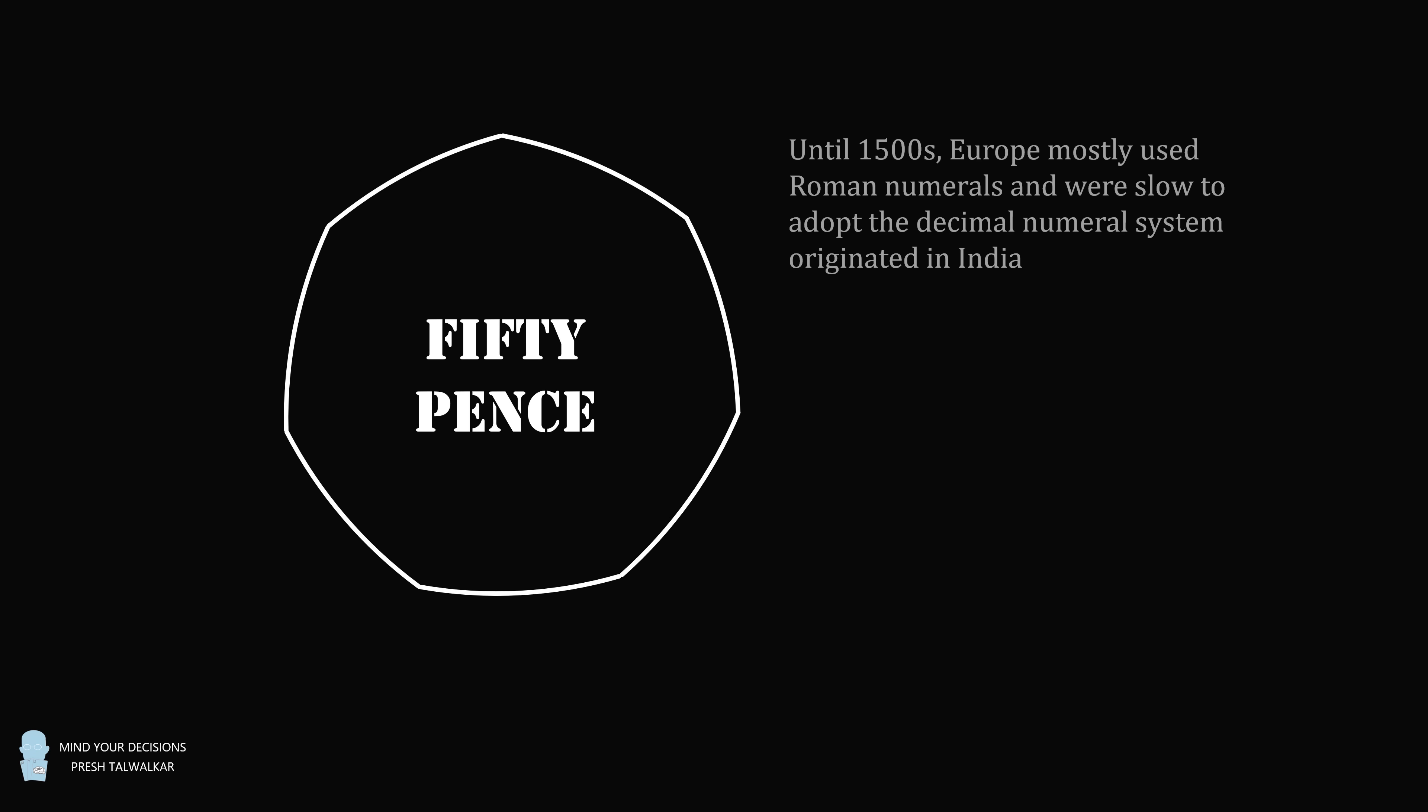Problem 2. There's an interesting history to the 50-pence coin. Until about the 1500s, Europe mostly used Roman numerals and were slow to adopt the decimal numeral system that originated in India. Prior to 1971, there were 12 pennies to a shilling and 20 shillings to a pound.